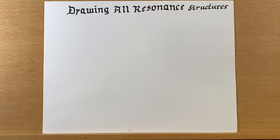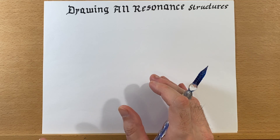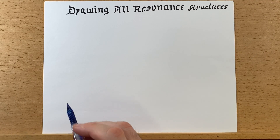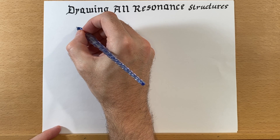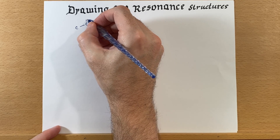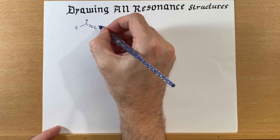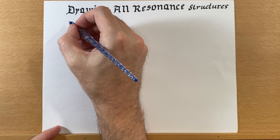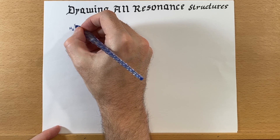We just finished talking about drawing some resonance structures, but now let's focus on drawing all of the resonance structures. It's important to be able to draw all of them because it gives us a better picture of what that molecule, ion, or whatever we're looking at actually looks like, and it shows us areas where the reactivity could be a little different than other spots on the molecule.